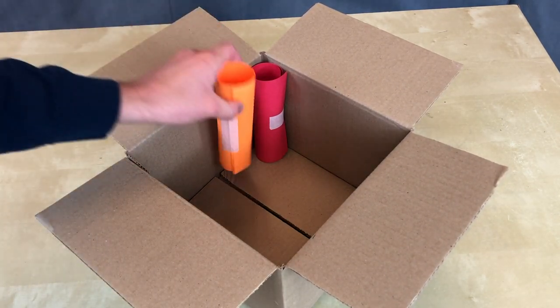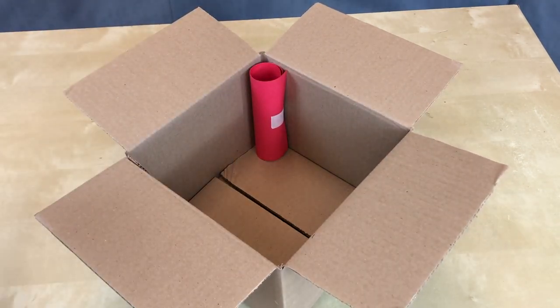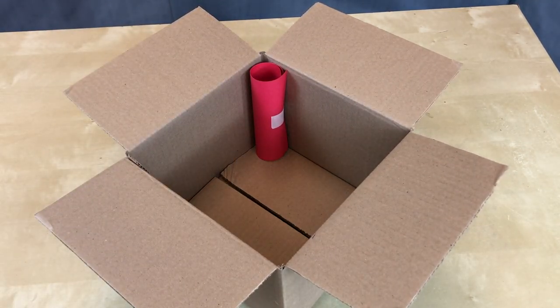So first we'll look at how to make cardboard boxes stronger. The primary technique we'll be using to make our boxes stronger is adding paper tubes to the inside.